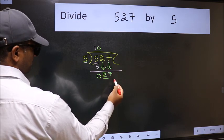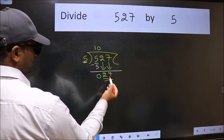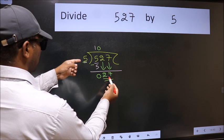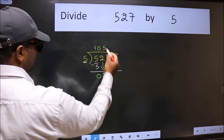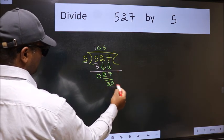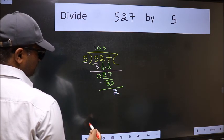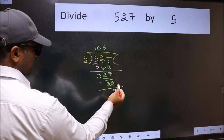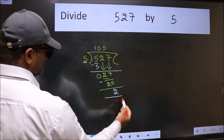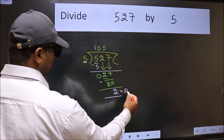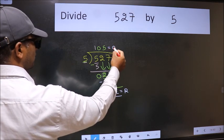Now 27. A number close to 27 in 5 table is 5 fives 25. Now we should subtract, we get 2. No more numbers to bring it down, so we stop here. This is our remainder and this is our quotient.